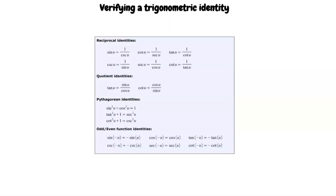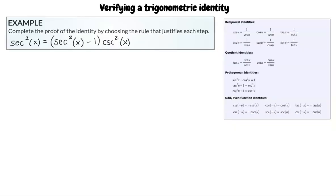Let's practice an example. Complete the proof of the identity by choosing the rule that justifies each step. The problems for this topic will give you the proof already written out. In other topics, you will need to write the steps yourself. The proof of this trigonometric identity transforms the right side of the equation until it is equal to the left side.